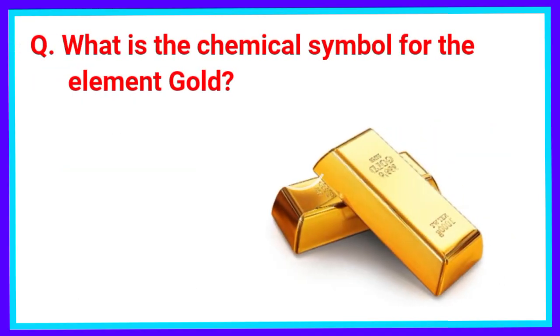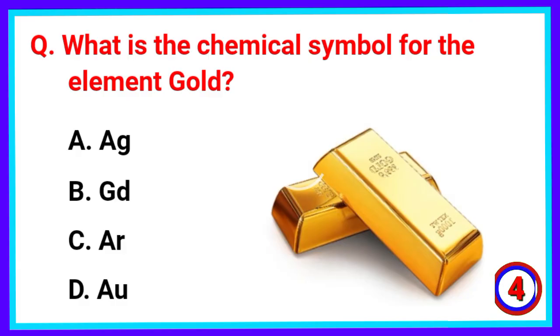What is the chemical symbol for the element gold? The correct answer is Option D. Au.